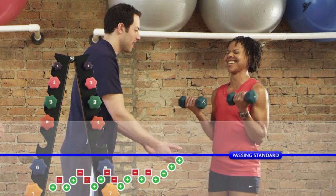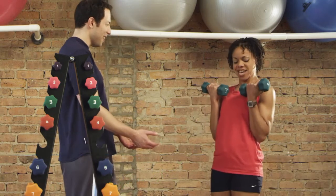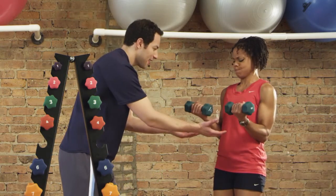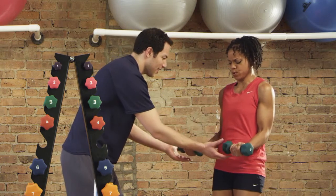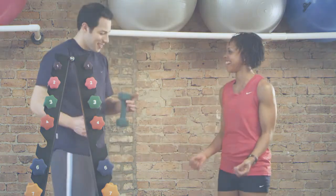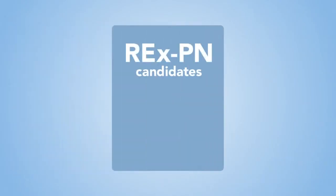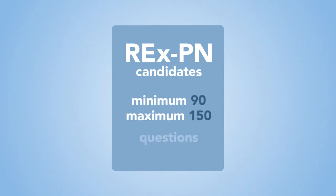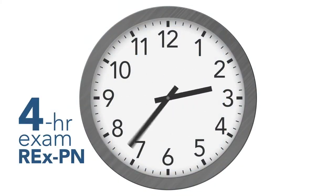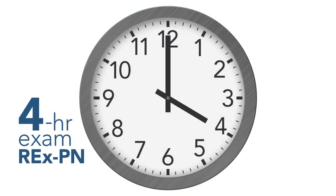Other candidates, however, who had competence levels near the passing standard — either a little above or below — will be asked more questions in order to determine their pass or fail results. To ensure complete content coverage, all REXPN candidates will answer a minimum of 90 and a maximum of 150 test questions. You'll be given up to four hours to complete the REXPN, which includes a tutorial and all break times.